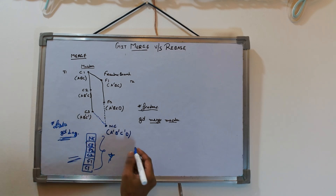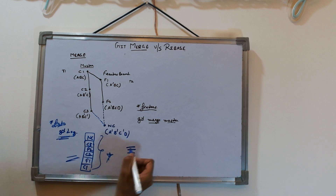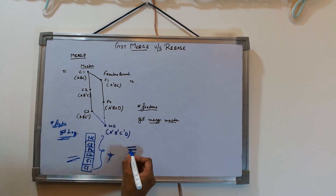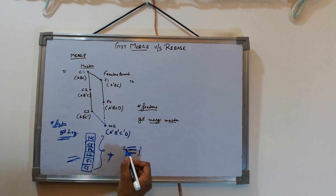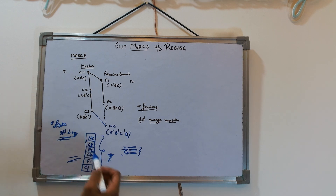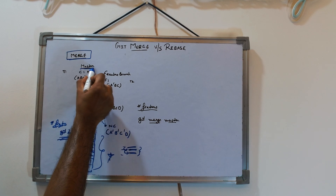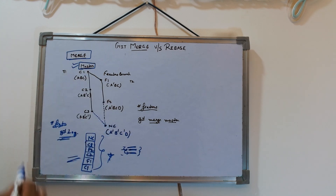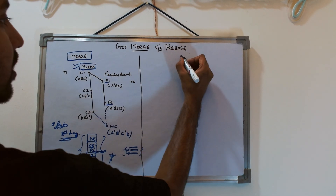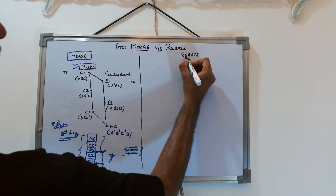Preserving history is very important. Remember, whenever any issue comes in IntelliJ, you do `git annotate` and you can see the full history — this code was changed to this, then to this, and so on. This history helps with debugging: who changed this part, and after that who changed it again. That's why git merge is very much recommended when you are working on a branch where many engineers are contributing.